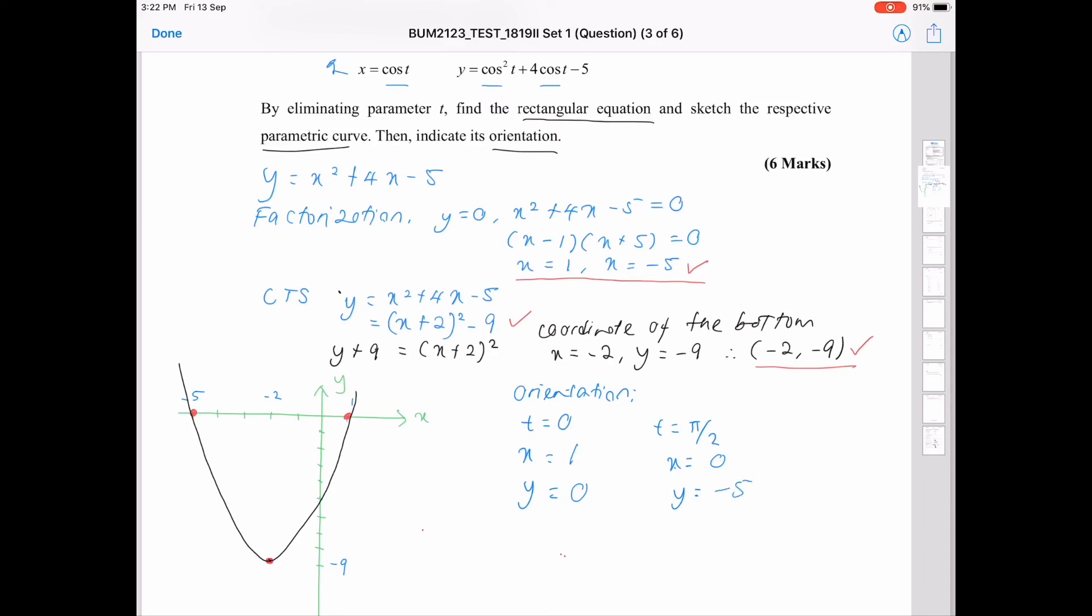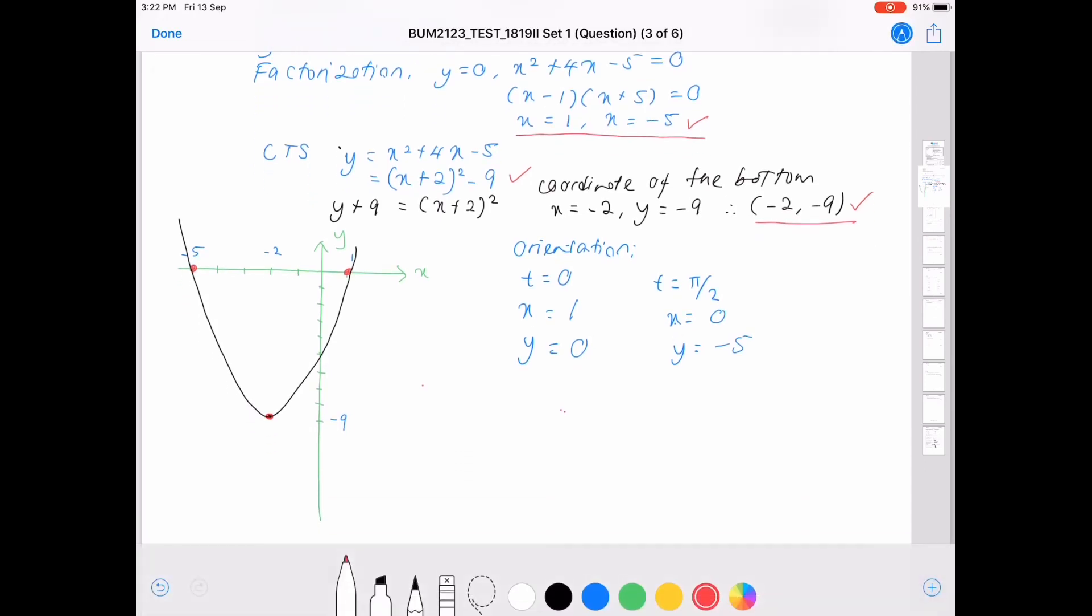So, point the coordinate. Okay. So, 1, 0, where is 1, 0? Somewhere here. This is the first point. And then, 0 minus 5. 1, 2, 3, 4, 5. This is the second point. So, obviously, the movement or the direction will be downward from the first point to the second point. So, enough for you to do just one direction. Okay.